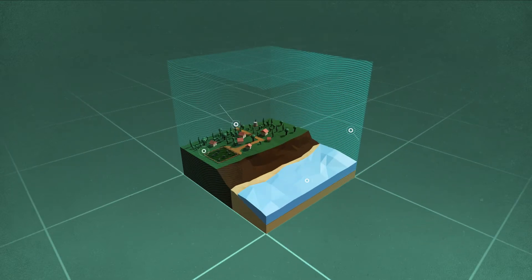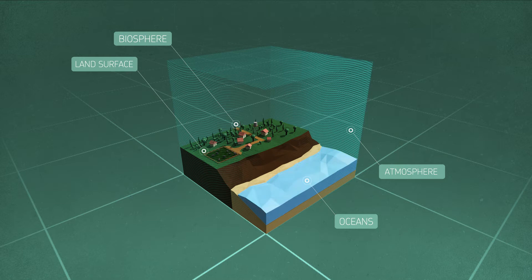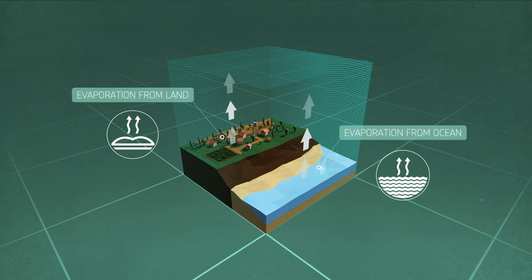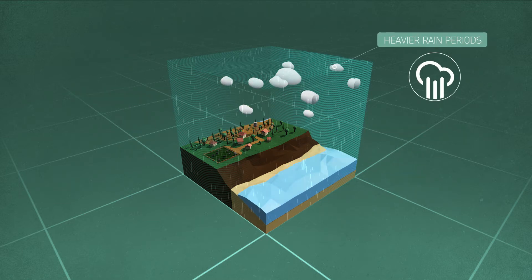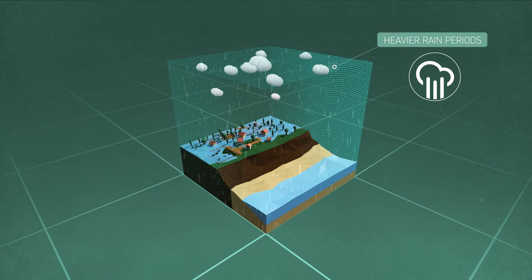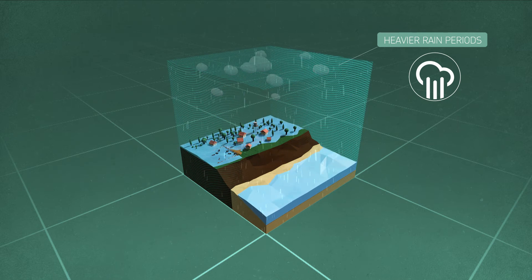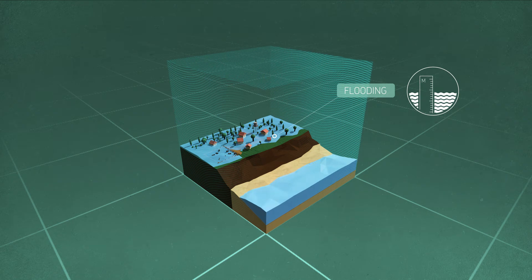Higher temperatures will lead to more extreme weather events. Some parts of Australia will become drier, other parts wetter. However in many areas what rainfall is received will occur in shorter heavier rain periods, increasing the likelihood of flooding.